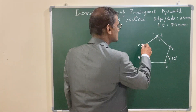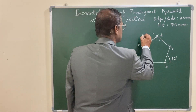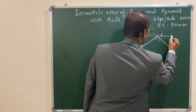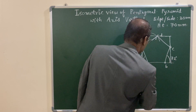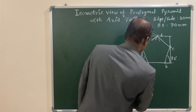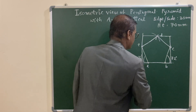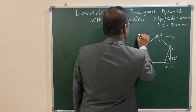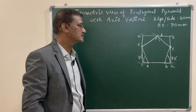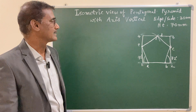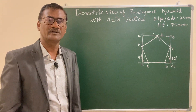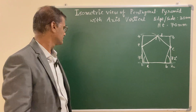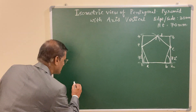Inscribe the pentagon in a rectangle because it has non-isometric edges. Draw a vertical line and a horizontal line, then another vertical line passing through the base. This completes the bounding rectangle. Give numbering to the corners: 1, 2, 3, and 4. Now you inscribe the pentagon in this rectangle. In the top view, you know how to draw it — let us draw a horizontal line.